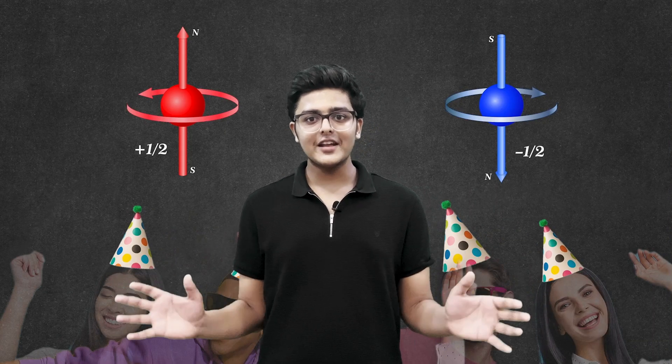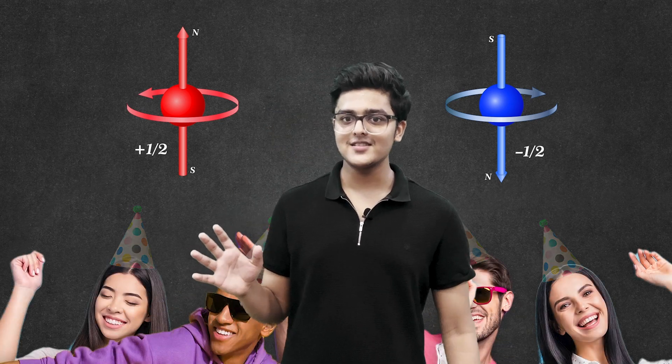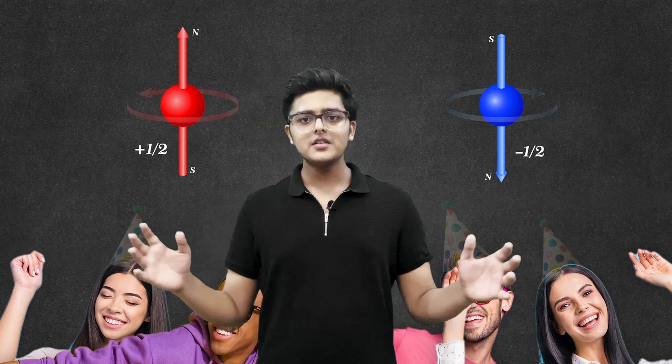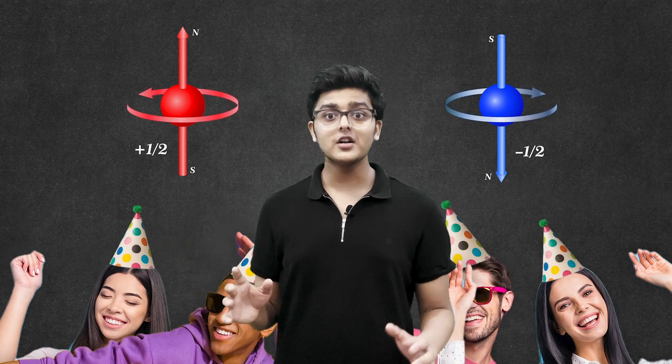Now the Schrödinger's equation tells you who your guests are and where they might be. But it fails to explain these hat preferences, the electron spin. And just like the real party, knowing these hat preferences is crucial because it affects how guests interact and the overall party vibes.